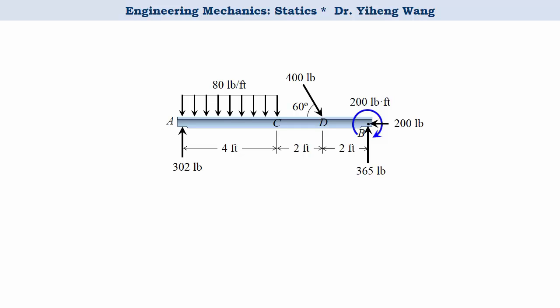Then we want to set up an x-axis to represent different locations along the member. You can set it up whichever way you want — from left to right, from right to left, from the center, or even setting up multiple x-axes. But I always set it up from left to right and use only one x-axis per problem. On this axis, point A is the origin where x equals 0, and point B is where x equals 8. Any point between A and B is represented by a value on this axis.